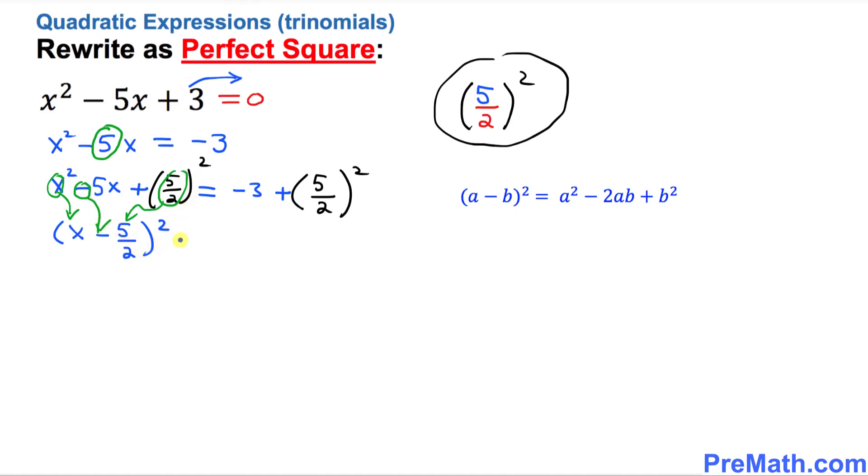Equals to, I'm going to write down negative 3 plus this one. When you open it up, that's going to become 25 over 4.